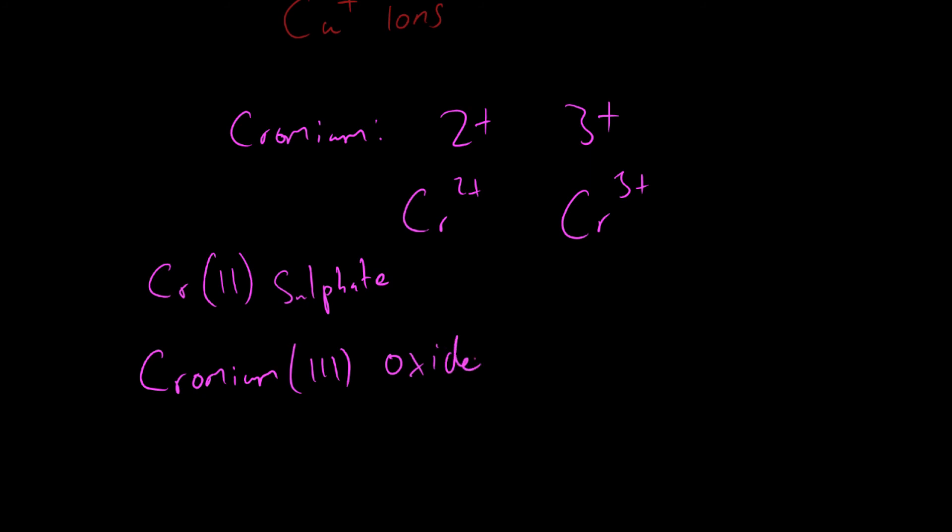So if chromium 3+ forms an oxide, you'll have chromium 3 oxide. If the 2+ ion forms a sulfate, you'll have chromium 2 sulfate. So the Roman numerals really tell you the charge on the metal ion.